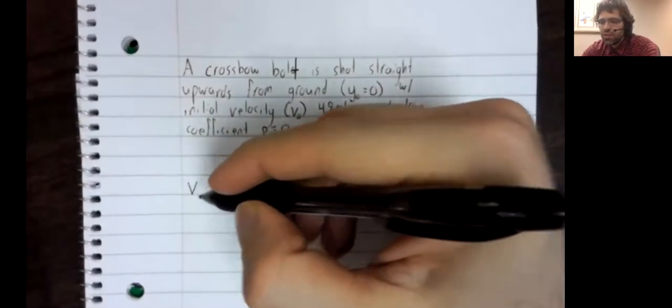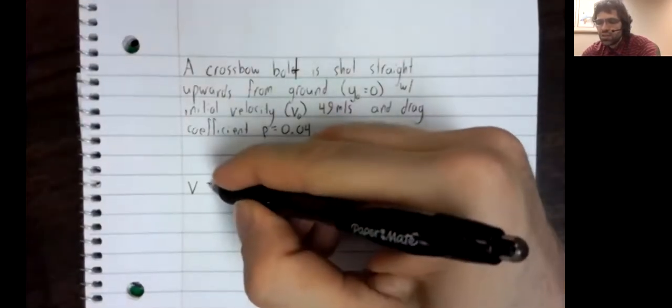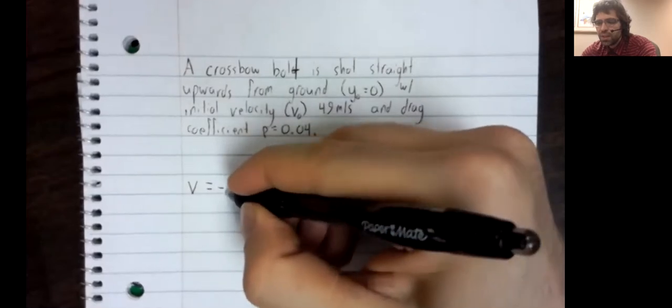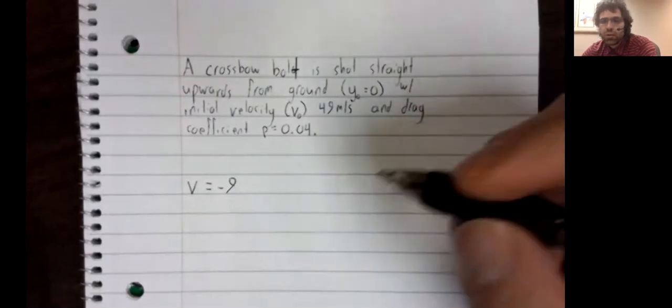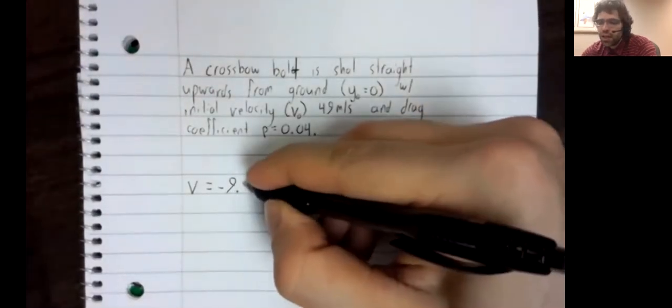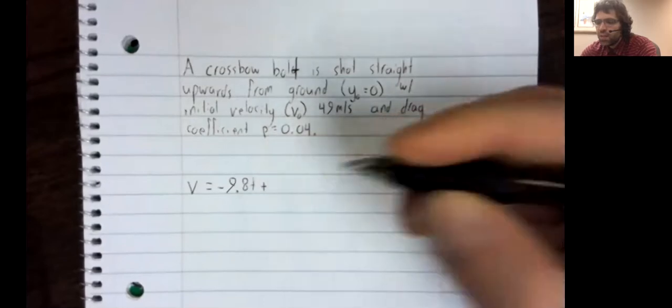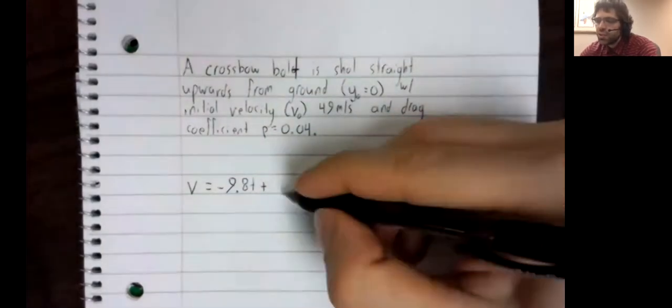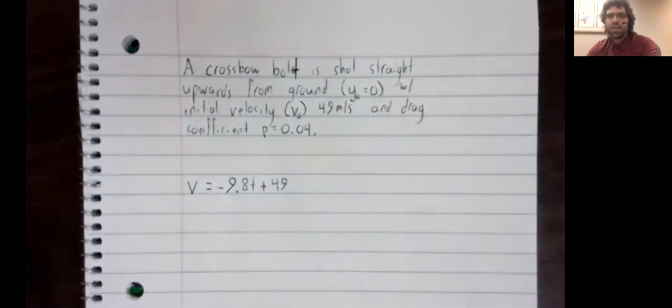So velocity without air resistance, our units are meters, is negative 9.8 T plus the initial velocity of 49.